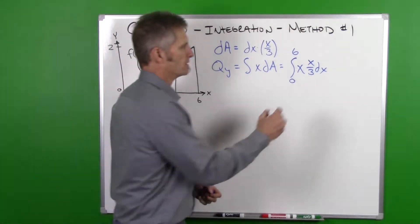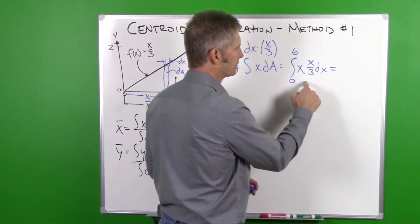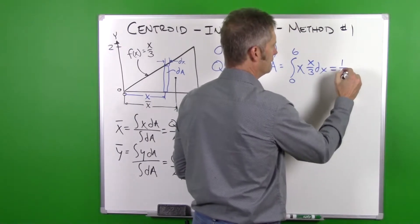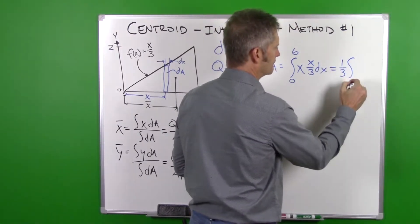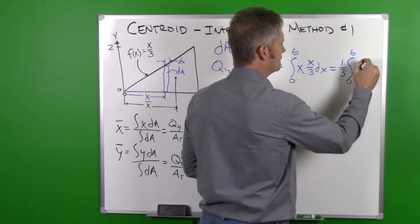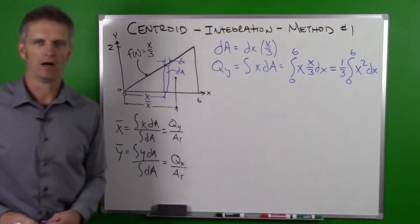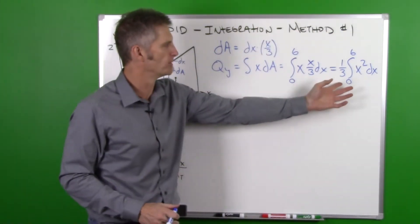So now let's rewrite this. We're going to simplify this down. This is going to be x squared divided by 3. I'm going to pull the 3 out front because it is a constant, integrating from 0 to 6, x squared dx. So now we have our integration. Now we just need to perform this integration.